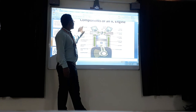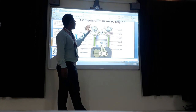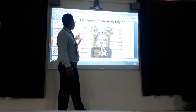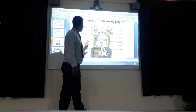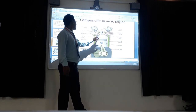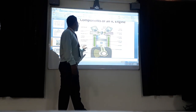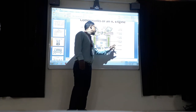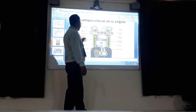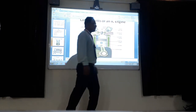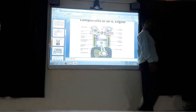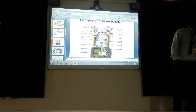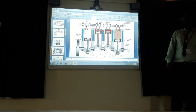The crankshaft, cylinder head, cylinder walls, and the combustion chamber block — these are some of the main parts of the engine, including the piston, connecting rod, and crankshaft.